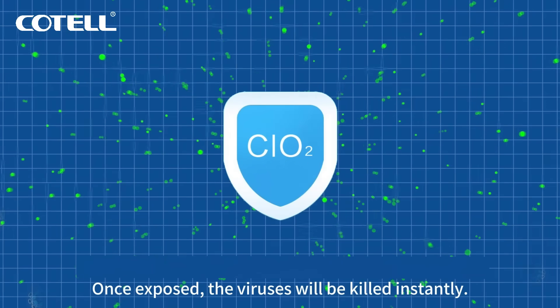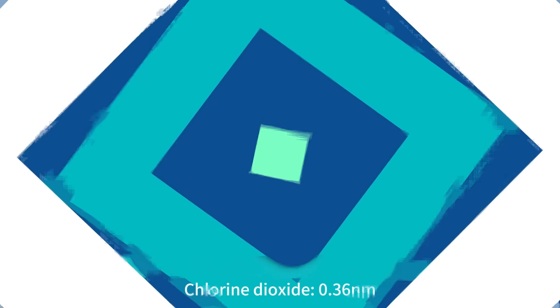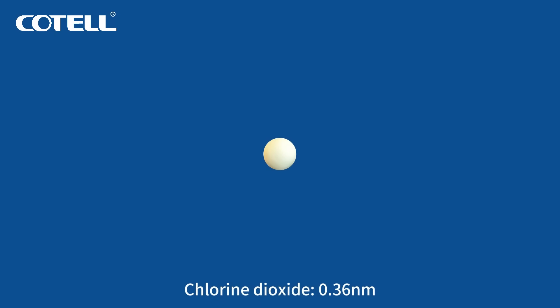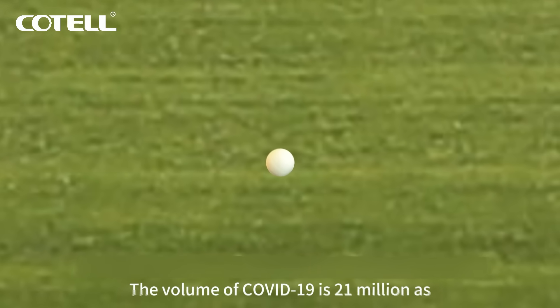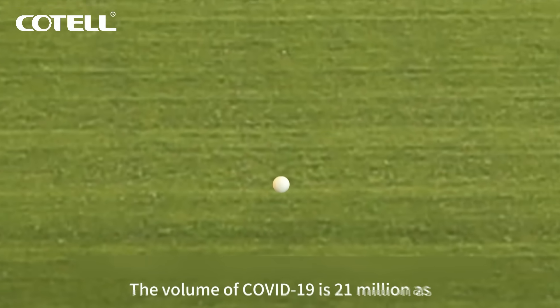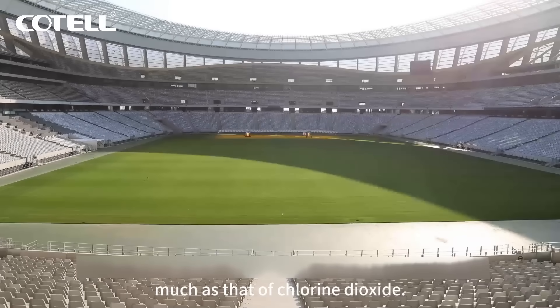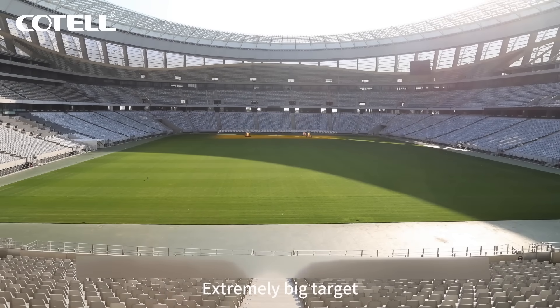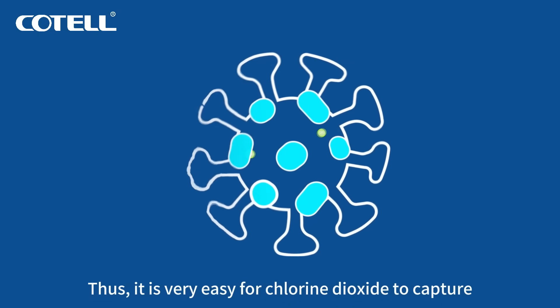Once exposed, the virus will be killed instantly, breaking the chain of virus transmission. Carbon dioxide measures 0.36 nm, while COVID-19 measures 100 nm. The volume of COVID-19 is 21 million times as much as that of carbon dioxide — an extremely big target.